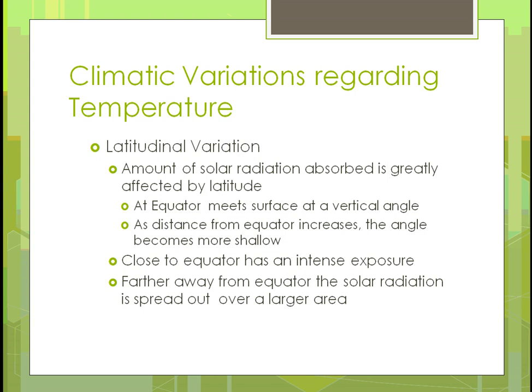For latitudinal variation, the amount of solar radiation absorbed is greatly affected by latitude. Because of the intensity of the incoming light, when it's more intense there's more ability for the soil to warm up. At the equator, sunlight meets the surface at a vertical angle. As you move away from the equator, the angle becomes more shallow. So the closer you are to the equator, the more intense the exposure — that's why it's hotter and things grow very differently close to the equator.